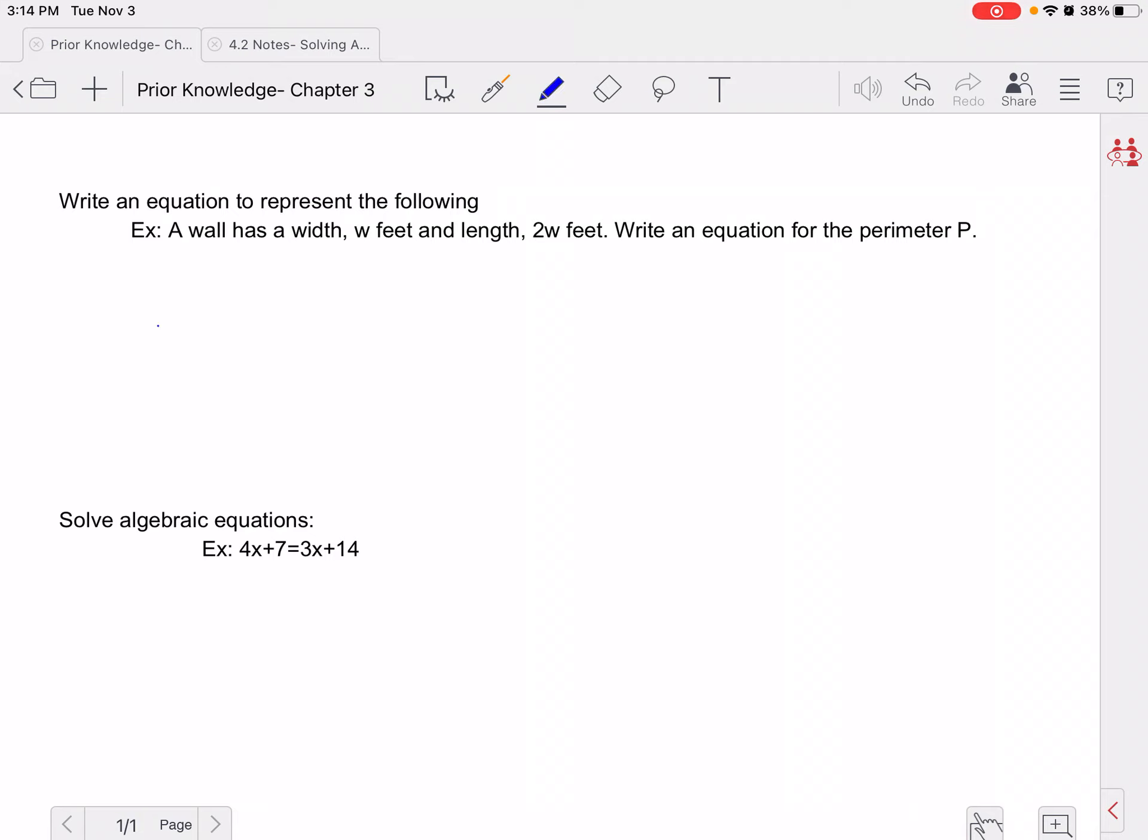So whenever I see a perimeter question, I like to draw a picture. So they said the width is w and the length is 2w. So I know this width is also w, and this is also 2w. And I know when I'm adding up for a perimeter, I'm adding up all the sides. So we have 2w plus w plus another w plus 2w, and that would equal p, the perimeter.